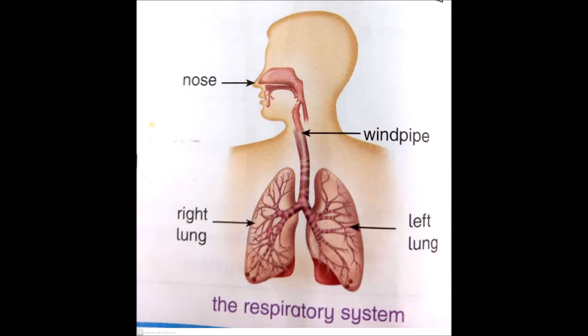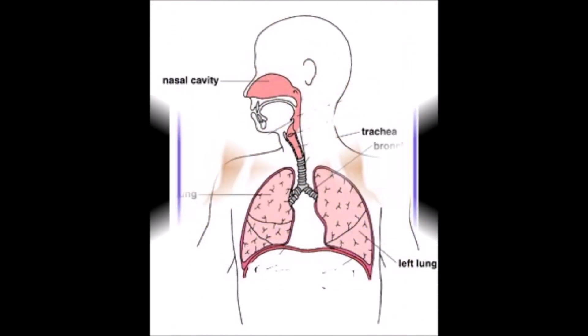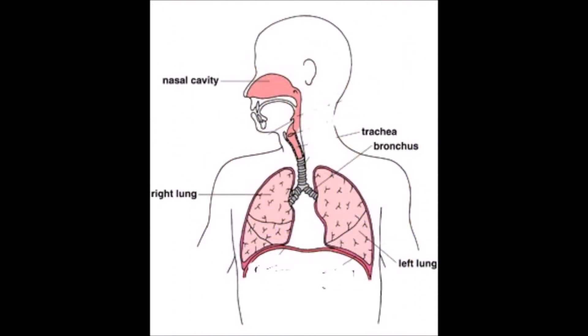The next topic is the respiratory system. The respiratory system consists of the nose, trachea (also called the windpipe), and the two lungs. Exchange of gases takes place in the lungs — oxygen is absorbed into the blood. Air enters from the nose, then goes to the windpipe. The end of the windpipe is divided into two branches called the right bronchus and the left bronchus; one goes to the right lung and the other goes to the left lung.